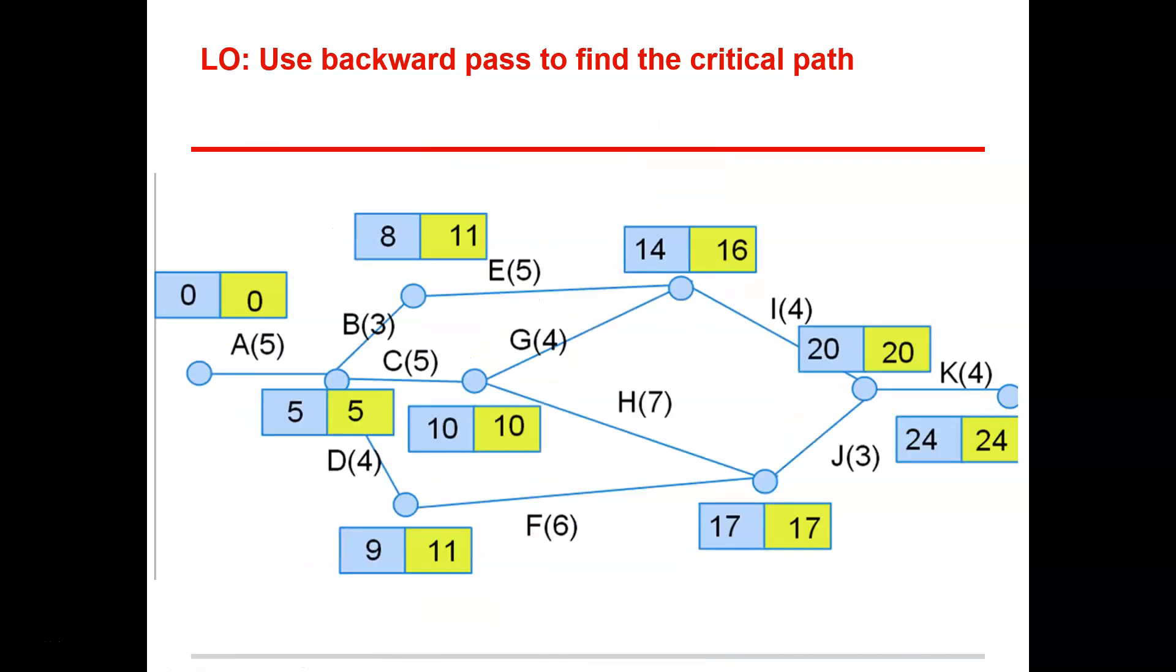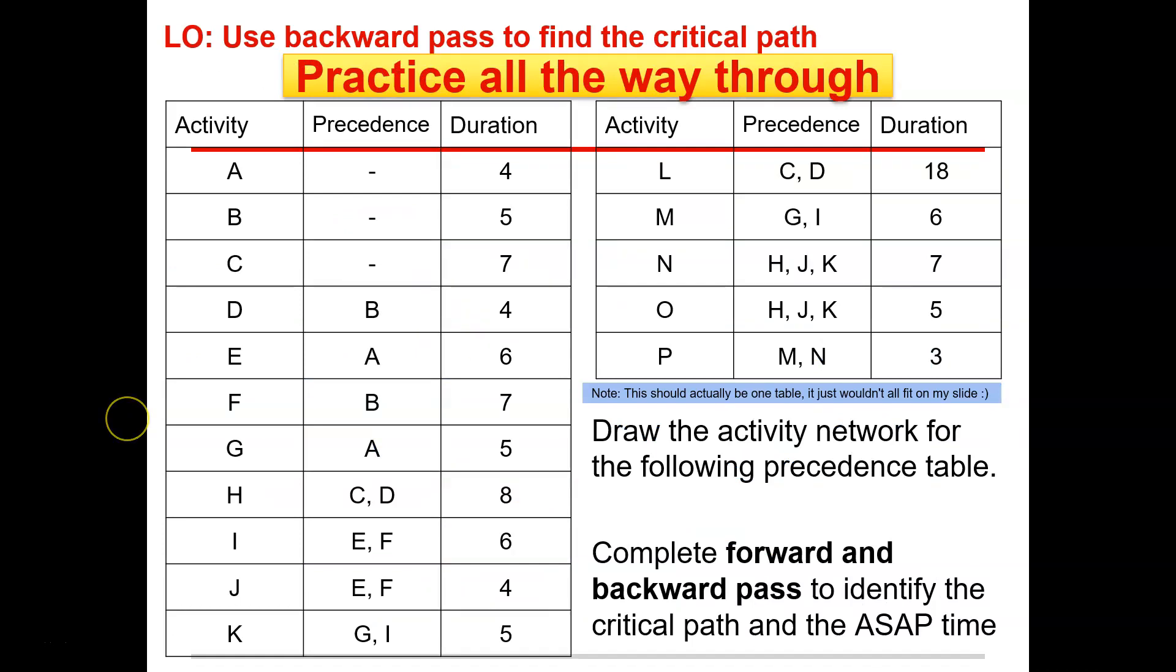Awesome. This was just a practice one for you. You go all the way through, you can create your activity network for the following precedence tables, complete the forward and backward path to identify the critical path and the ASAP time. Pause the video, then right here, have a go at it and I'll show you the solution now.